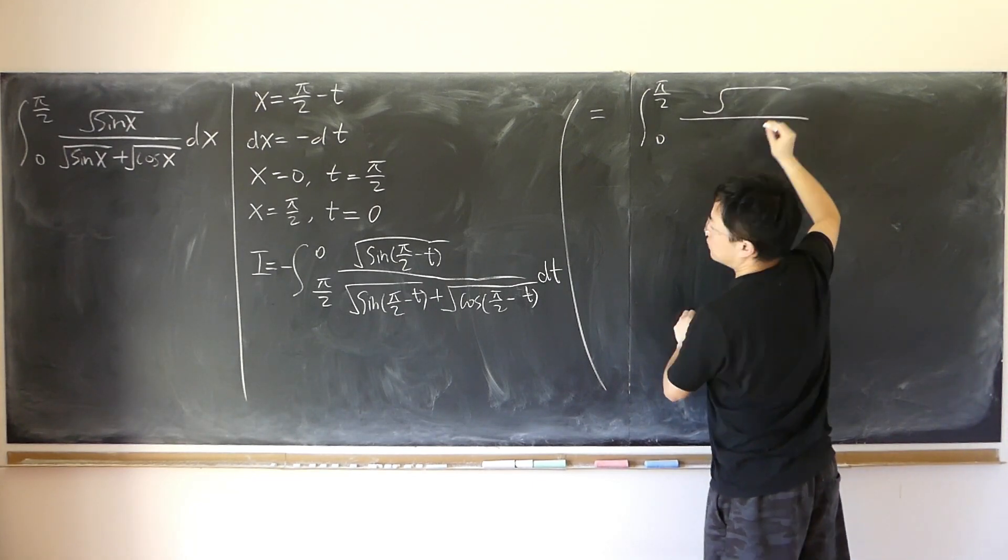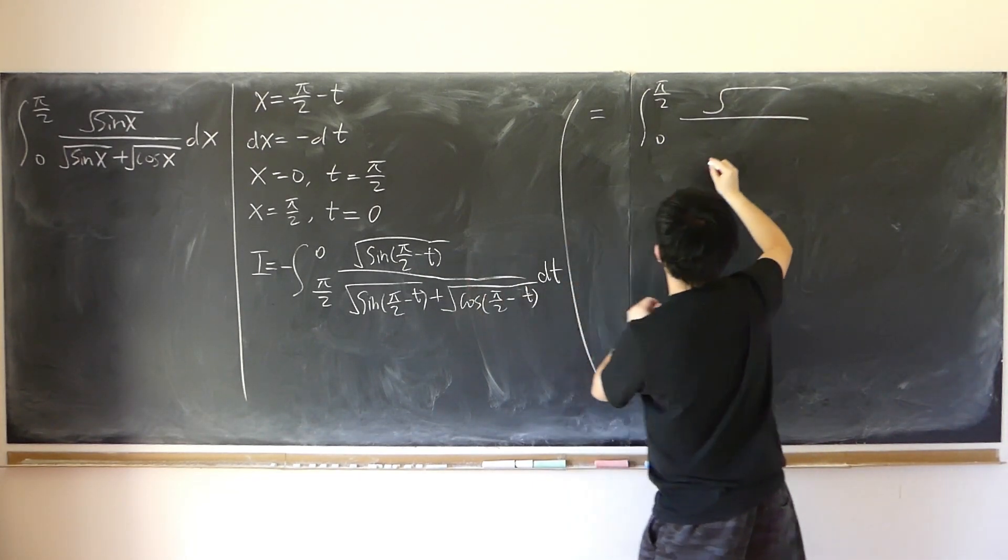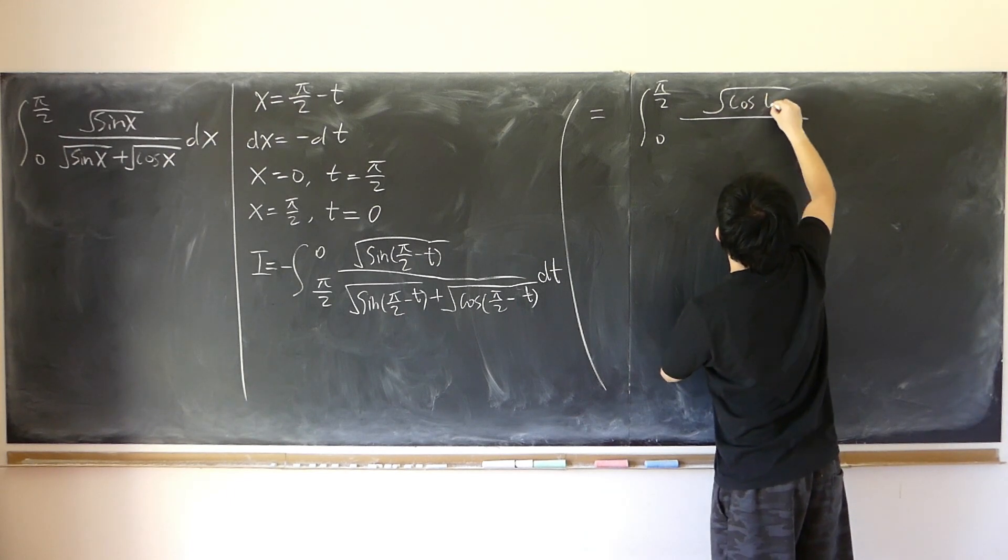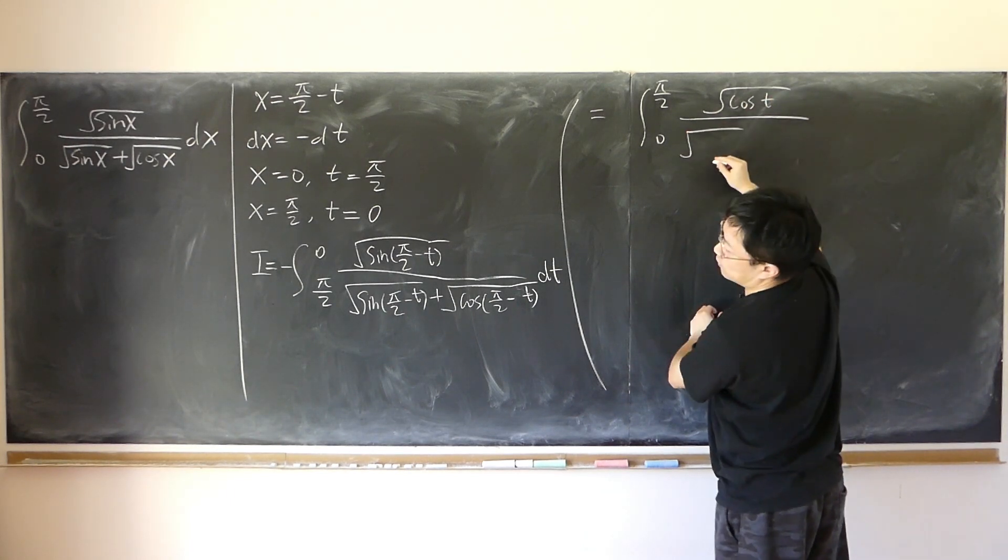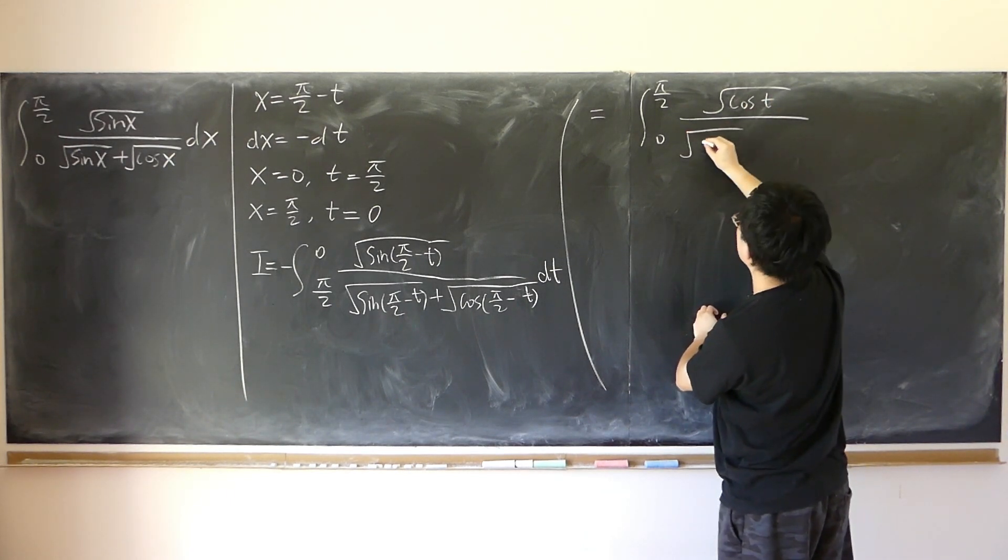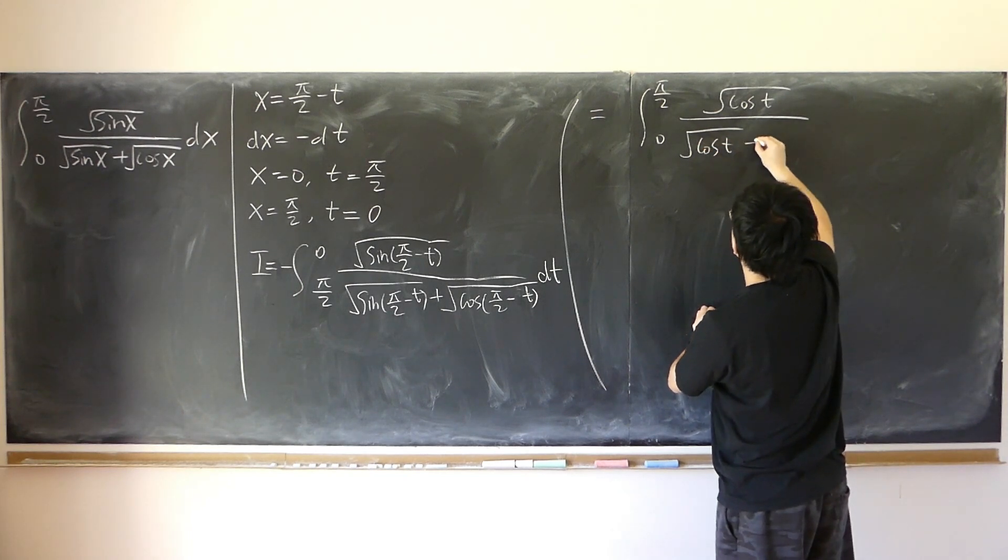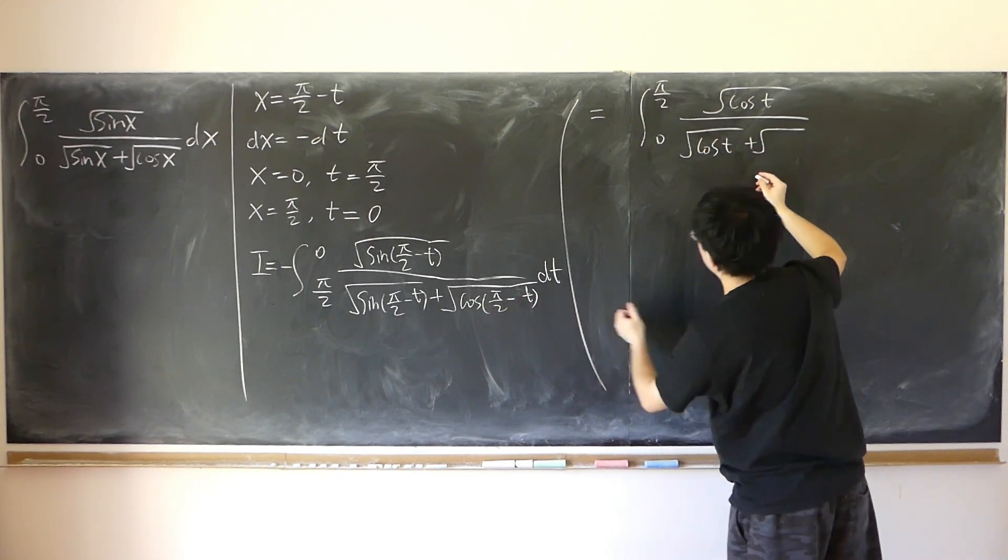And we have square root of sine of half pi minus t becomes cosine t. And likewise, square root of sine half pi minus t plus square root of this becomes sine t.